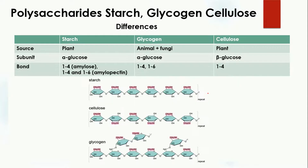Regarding bonding in starch: 1,4 bonding is present in amylose, and 1,4 and 1,6 linkage is present in amylopectin. So we can find two types of bonding in starch. In glycogen, we can also find 1,4 and 1,6 bonding — here you can see the bond between carbon 1 and carbon 4, and branches formed between carbon 1 and carbon 6, giving the 1,6 bonding. In cellulose, we have only 1,4 bonding between carbon 1 and carbon 4.